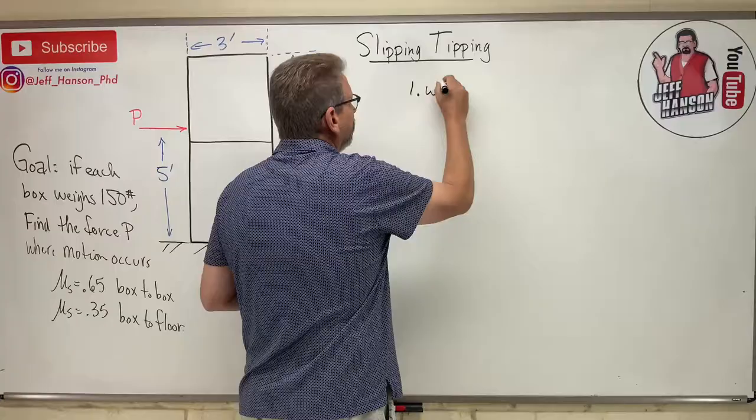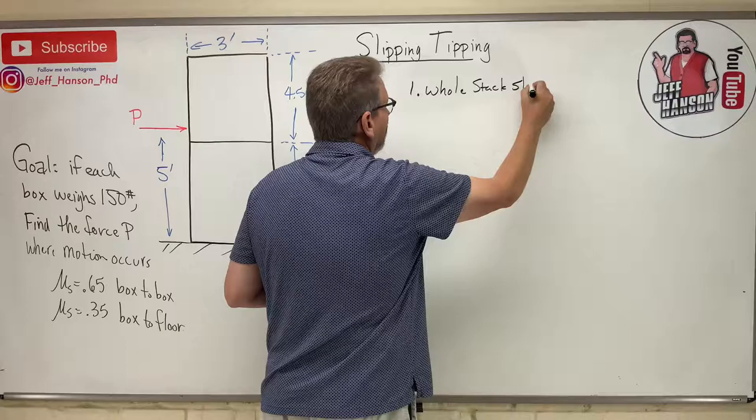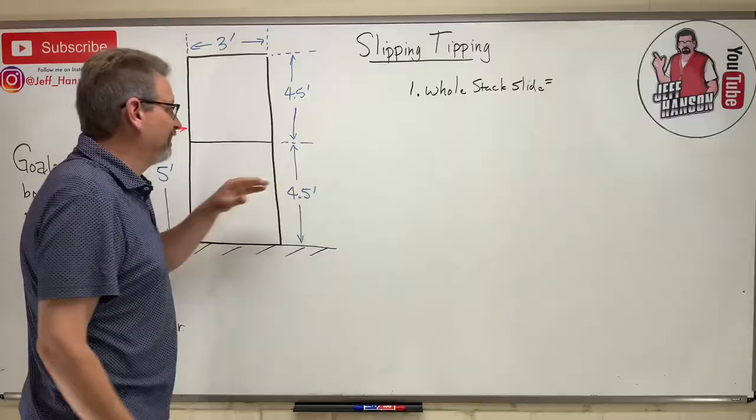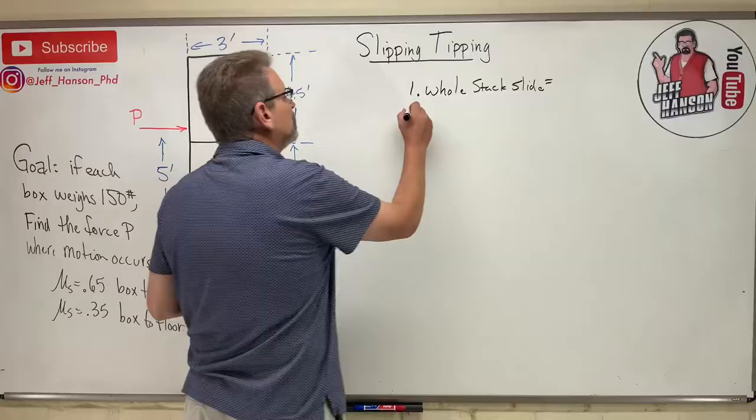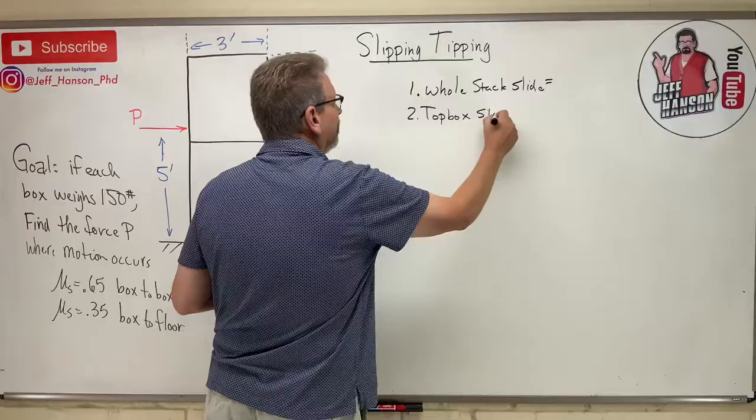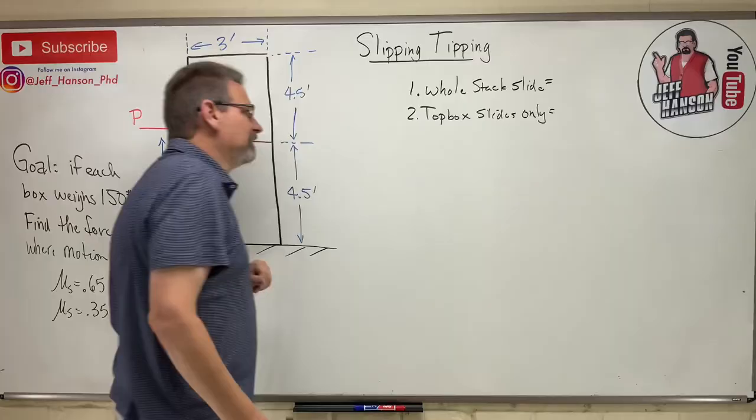Number one: the whole stack can slide — the thing stays together and just slides. Number two: the top box could just slide off while the bottom box stays still — the top box slides only.